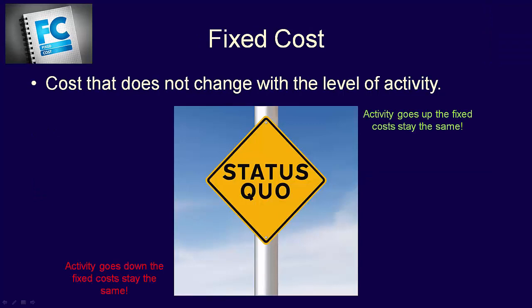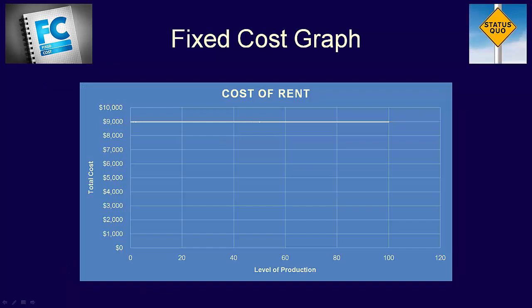A fixed cost is a cost that does not change with the level of activity. Total fixed costs stay the same if the level of activity goes up or down. You've likely seen a fixed cost graph — a horizontal straight line that does not change with the level of activity, as long as we're within the relevant range.